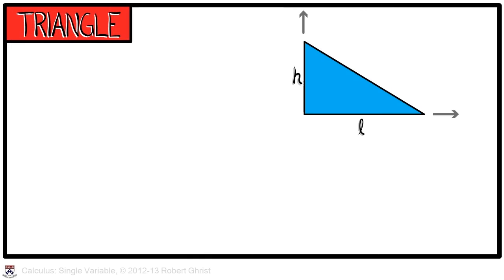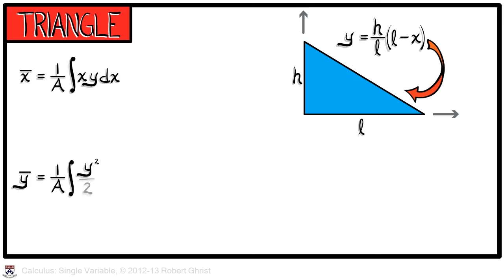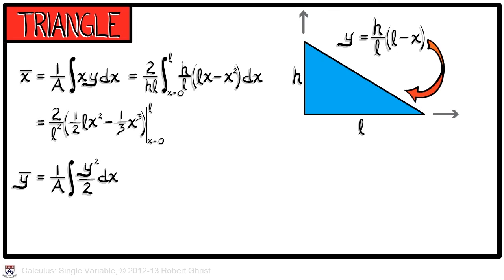Unfortunately, not all domains have nice symmetry properties. Consider a triangle, let's say a right triangle of height h and length l in the plane defined by the hypotenuse given by y equals h over l times quantity l minus x. What's the centroid of that region? We can write down our formulae for x bar and for y bar. It's simple enough in this case. What we have to integrate to obtain x bar is 2 over h l, that's 1 over the area, times the integral as x goes from 0 to l. And h over l times quantity lx minus x squared dx. That's a simple polynomial, easy enough to integrate. Substituting in l gives us, after a little bit of simplification, one-third l. So the x-coordinate of the centroid is one-third of the way from the left.